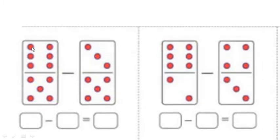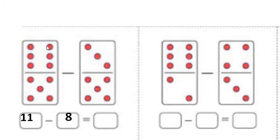Count with me — there are 11 dots. Out of that, I have to reduce 8. By reducing 8 from number 11, I count the remaining dots: 1, 2, and 3. There are 3 remaining dots, which we write in the answer box.